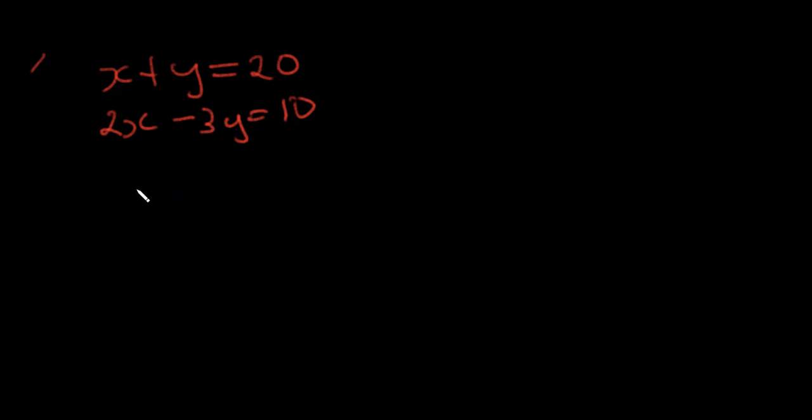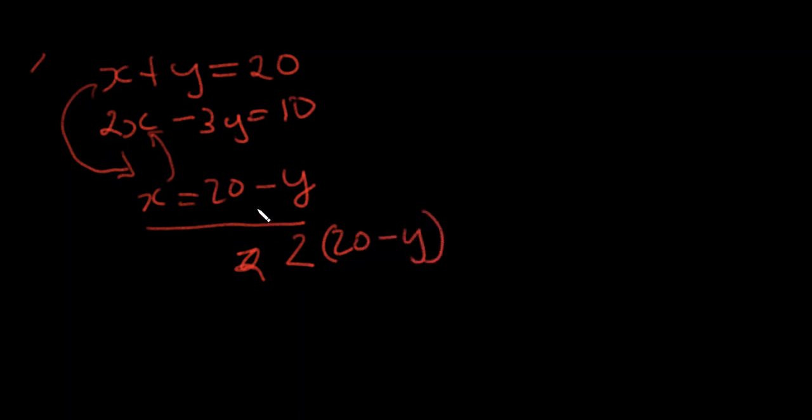Let's make x the subject of the formula here. So x from here, x is equal to 20 minus y, and we substitute this x here, which then makes this 2 into 20 minus y, which is actually how we defined x from the previous equation, minus 3y is equal to 10.